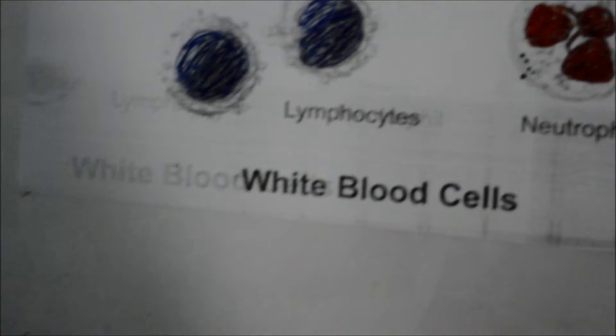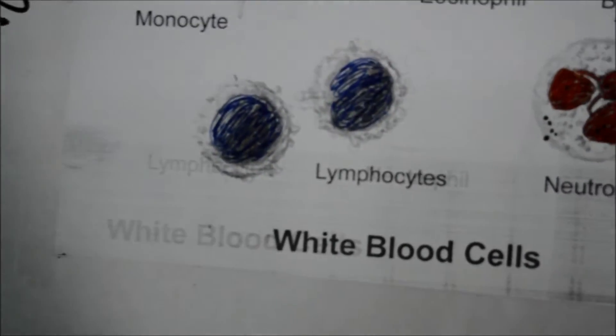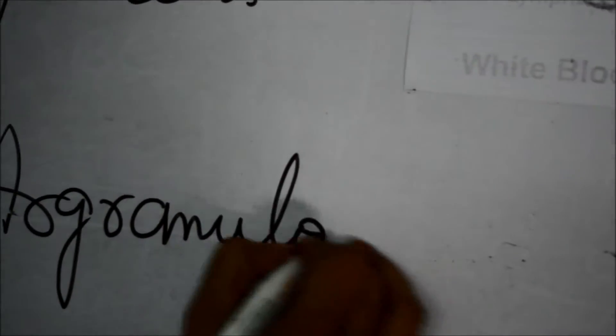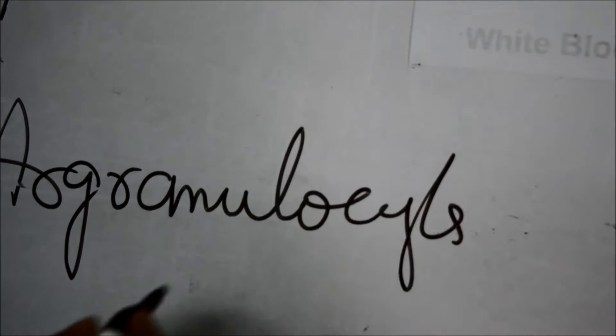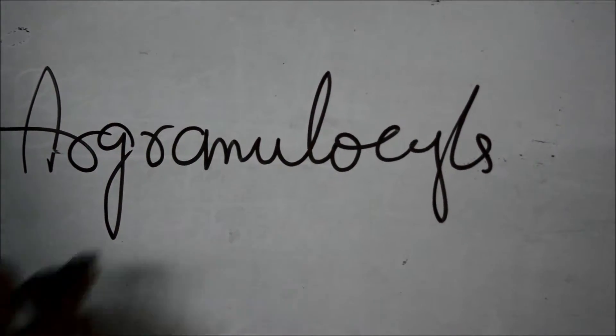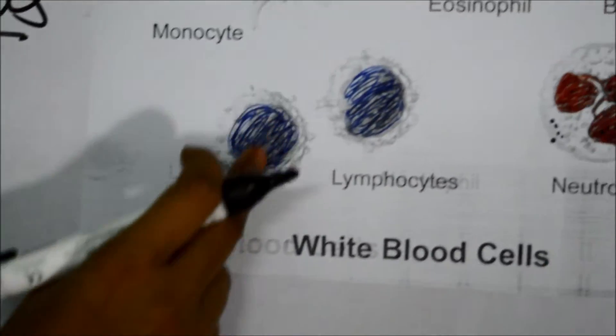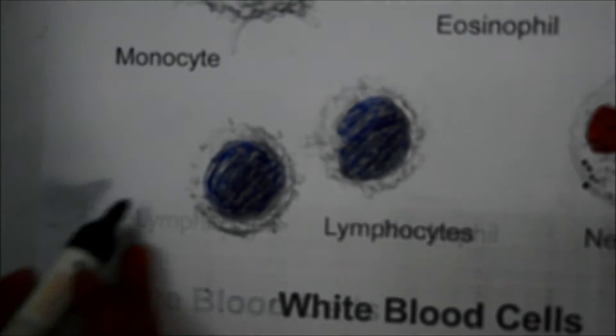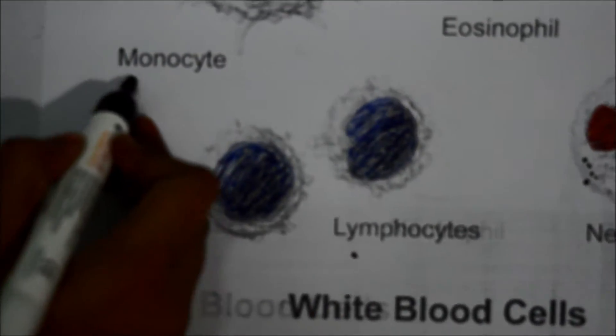Now let us see about agranulocytes. As the name indicates, they do not have any granular matter inside the cytoplasm. The nucleus in these cells is large. There are two types of agranulocytes: the first one is lymphocytes and the second one is monocytes.